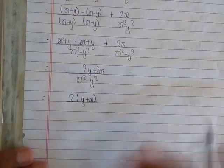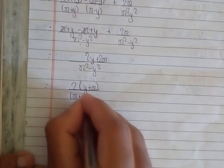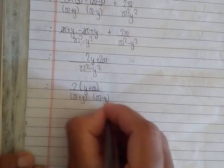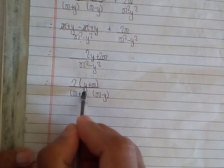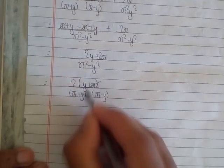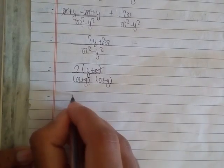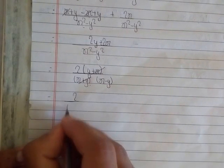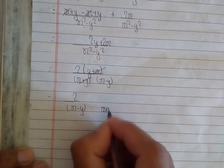And again, we know that x²-y² means (x+y)(x-y). You can see here y+x and x+y - it's the same thing, so we can cancel them. Then 2/(x-y) is the answer.